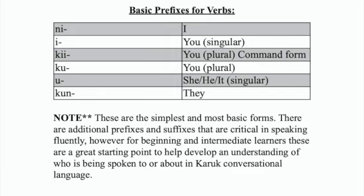In Kadut conversational language. So we have: ni, i — you singular; ki — you plural. That's a command form which is specific to telling multiple people that you'd like them to do something. Ku, which is a plural form for 'you all.'